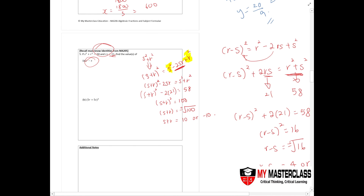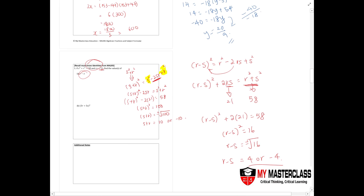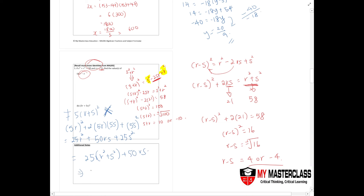For part B — finding 5r plus 5s whole squared — a common mistake is to not apply the identities correctly. Remember that the 5 has identities as well. Expanding properly: 5r plus 5s squared equals 25r squared plus 2 times 5 times 5 times rs plus 25s squared, giving 25r squared plus 50rs plus 25s squared. Factor out 25: 25 times bracket r squared plus s squared plus 50rs. Substituting 58 and 21: 25 times 58 plus 50 times 21 gives a total answer of 2500.